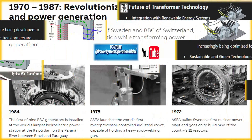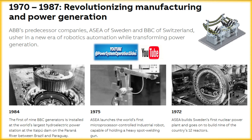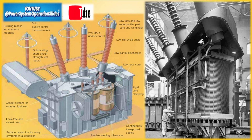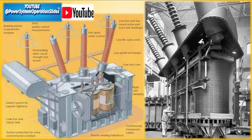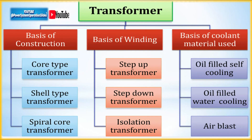Charles F. Scott's Scott-T connection allowed for the conversion of two-phase power to three-phase power, reducing copper usage and optimizing power transmission. The Niagara Falls Power Project, completed in 1895, utilized Scott-connected transformers to transmit power over long distances, establishing the first major electric power project in the world. These developments, along with continuous improvements in transformer technology, set the stage for rapid advancements in electrical engineering and power distribution in the following decades.